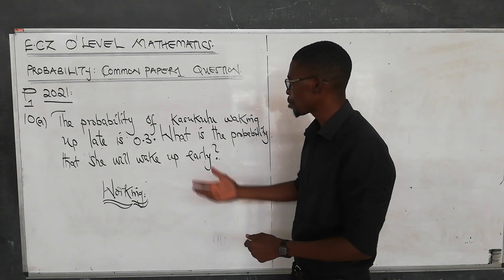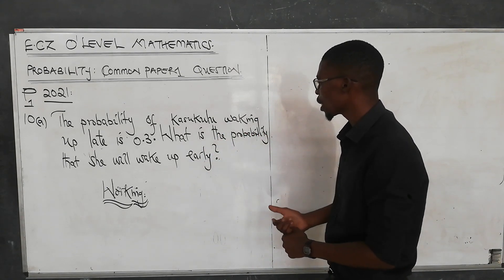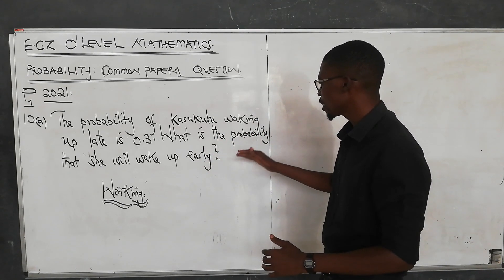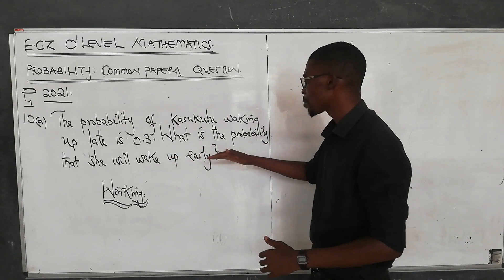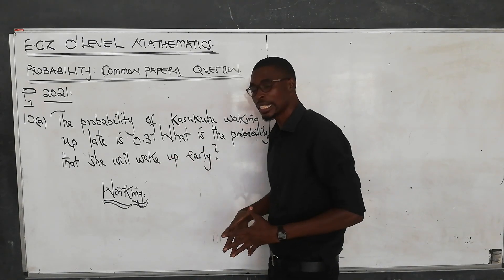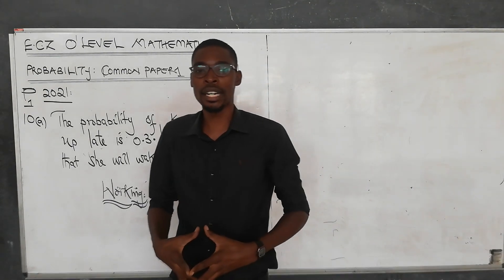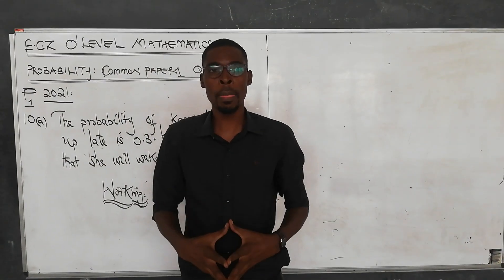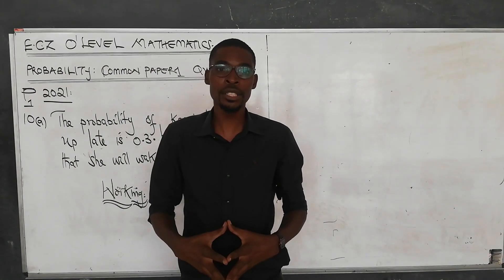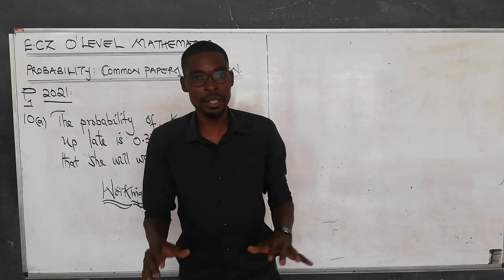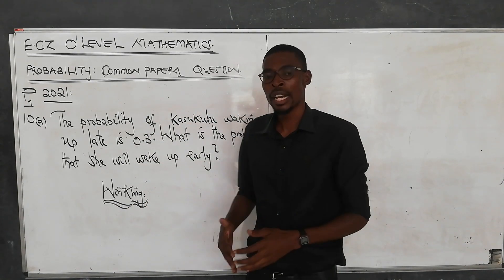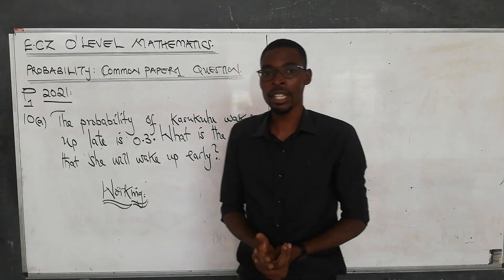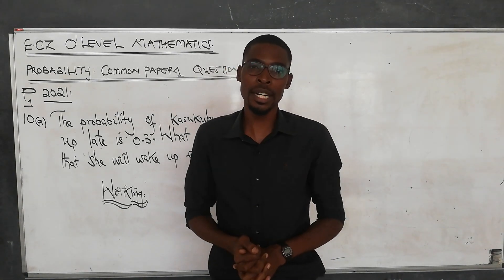Now the question is saying: the probability of a girl waking up late is 0.3. What is the probability that she will wake up early? These are questions that I have witnessed a number of my students getting wrong, for the reason of not understanding exactly what the question is asking and what concept it is derived from.